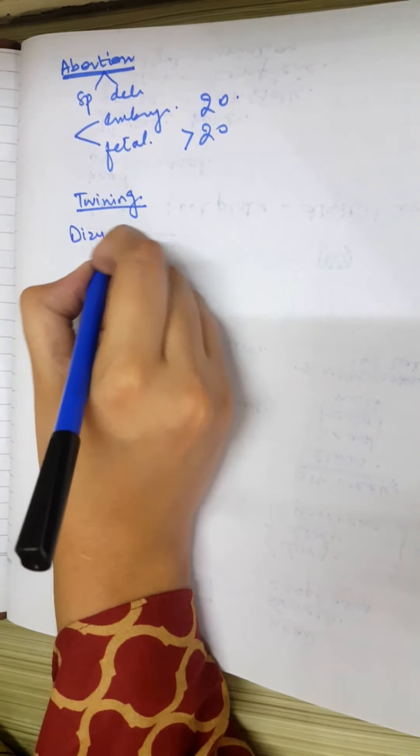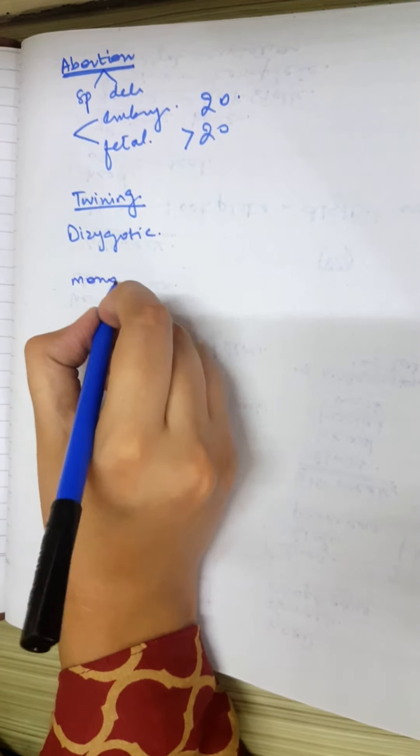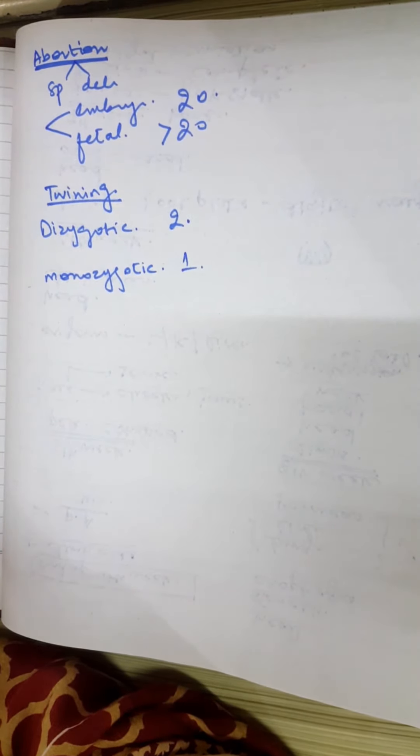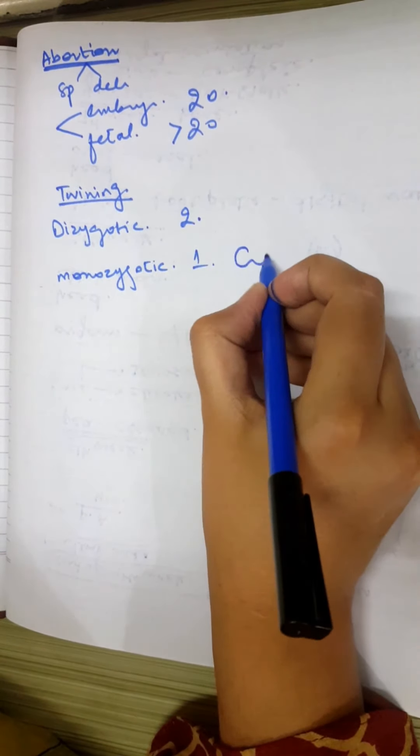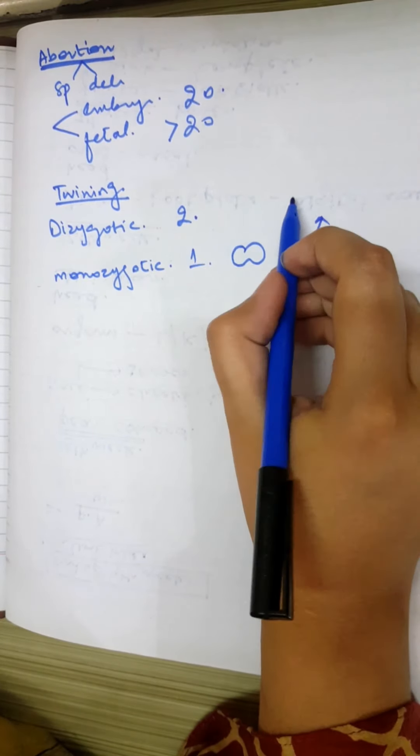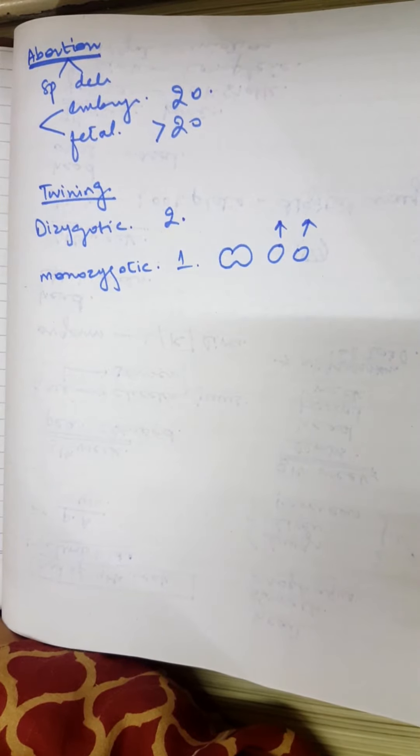The next clinical topic is twinning. Twinning occurs in two forms: dizygotic and monozygotic. In dizygotic twins, two separate oocytes are fertilized, producing two babies that do not look alike. In monozygotic twins, one oocyte is fertilized and then splits, producing two babies with the same physical appearance and the same placenta but two amnions.